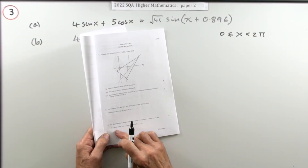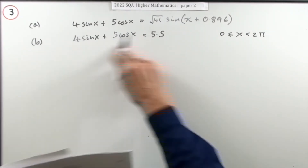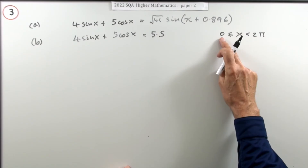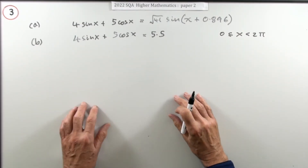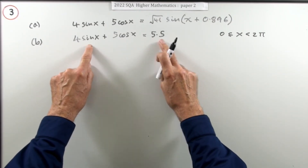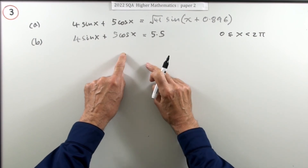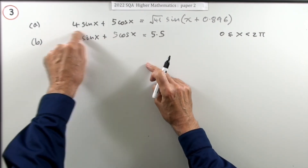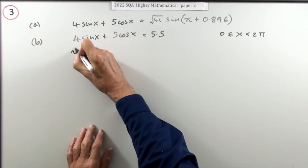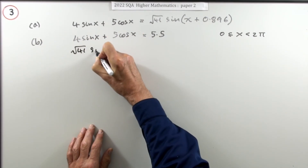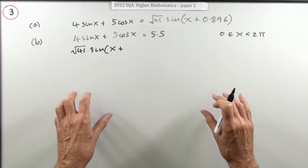Part B says 'hence' — not 'hence or otherwise' — so you must use the result from part A to solve this equation, where x is between 0 and 2π. The approach is first to reduce the equation to a single sine or cosine. There's no disguise — the equation in part B is exactly the same expression you had in part A, so just write down what you found: √41 sin(x + a).